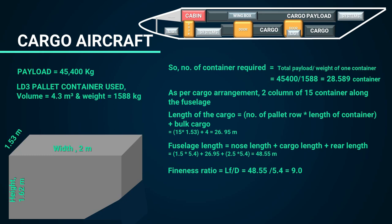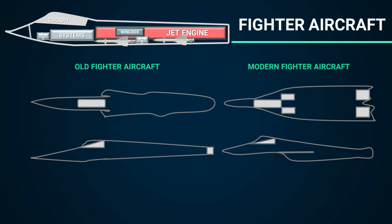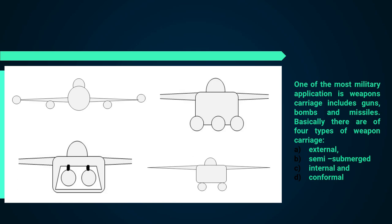Coming to the fighter aircraft: the fuselage length is measured from the tip of the nose cone to the engine exit plane. Most fighter aircraft carry weapons such as guns, bombs, and missiles. There are two dynamic configurations — old and modern. The modern one features an S-duct system and stealth technology. There are four types of weapon carriage: external, semi-submerged, internal, and conformal. Based on your design requirement, you have to choose the right layout.